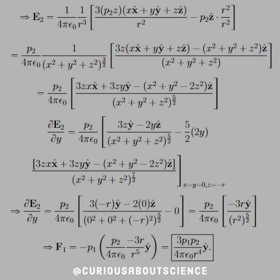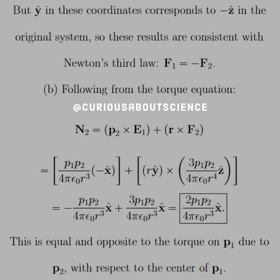We plug in z equal negative r and simplify it through. The negatives cancel one another when multiplying. So that simplifies down in the final line and we're able to cancel a factor of r out. And the negatives cancel, leaving us with a force of 3P1P2 divided by 4πε₀r⁴ in the y hat direction. But let's recall that we transformed this scenario, so the y hat in these coordinates corresponds to the negative z hat in the original system. So these results are indeed consistent with Newton's third law, where F1 equals negative F2. That's pretty cool to see.